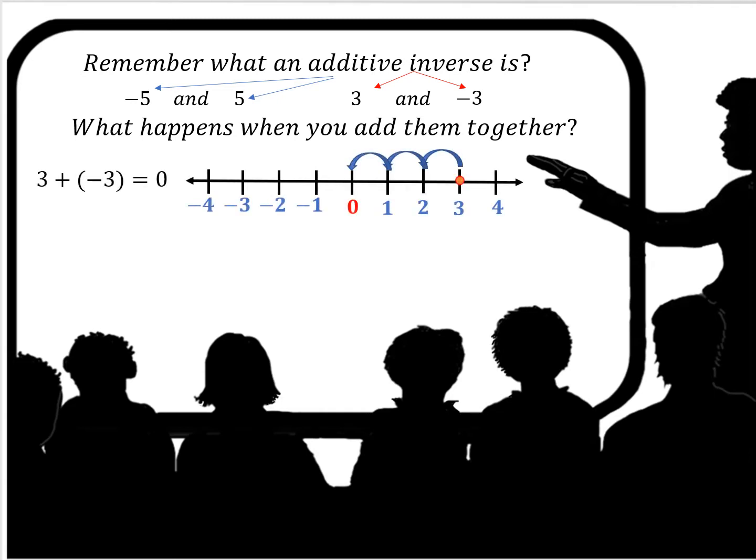Well, 3 plus negative 3 is 0. Let's take a look at it on the number line. Start at 3 and you're going to go to the left 3 spaces and you end up at 0.